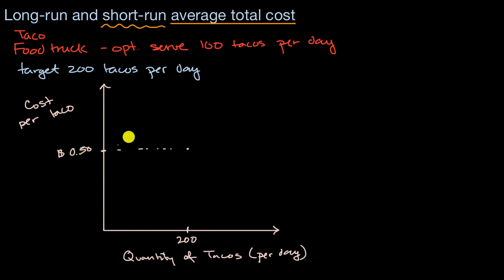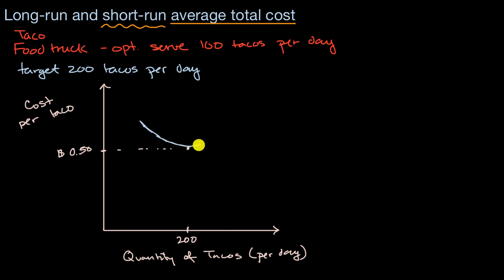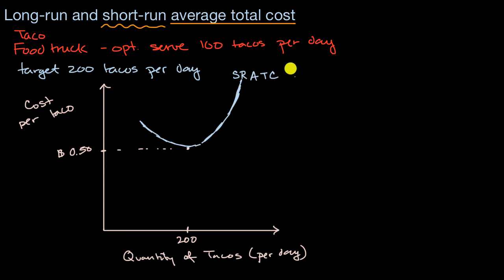The actual number of tacos produced in a given day might vary from the target, and that helps construct the average total cost curve. The curve might look something like this — a U-shaped curve we've seen in past videos. Because we're differentiating between short run and long run, let's be clear: this is our short-run average total cost with two food trucks.